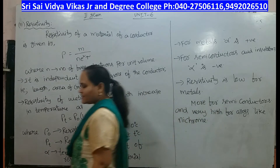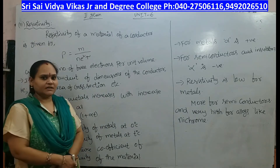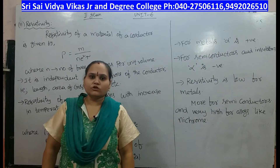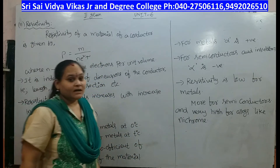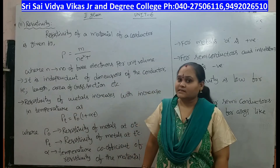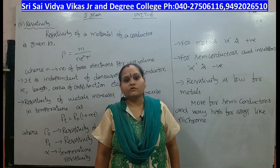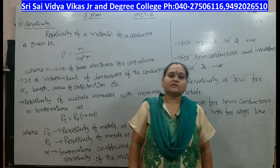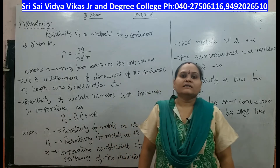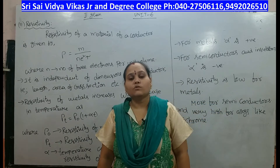Next, current density J is equal to sigma. Now, resistance is defined as R equal to V by I — the ratio of the potential difference applied across the ends to the current flowing through that conductor. Its SI unit is ohms.